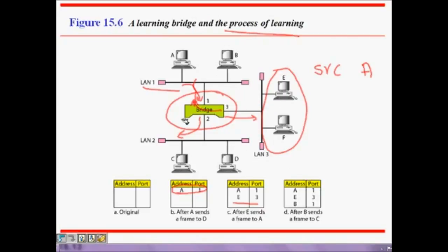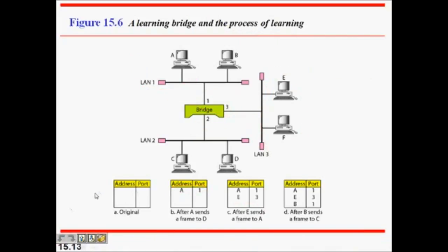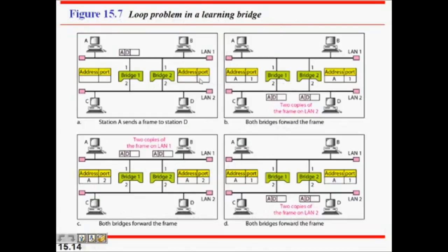After some time, when most nodes have sent at least one frame, the table will be mostly filled. If a new source appears for which the entry is not yet in the table, the bridge floods the frame to all ports. This is how the learning process takes place.